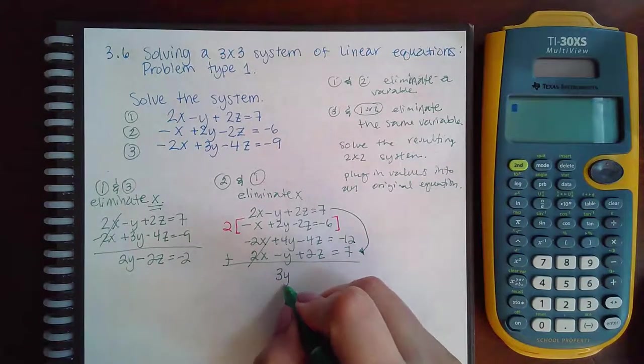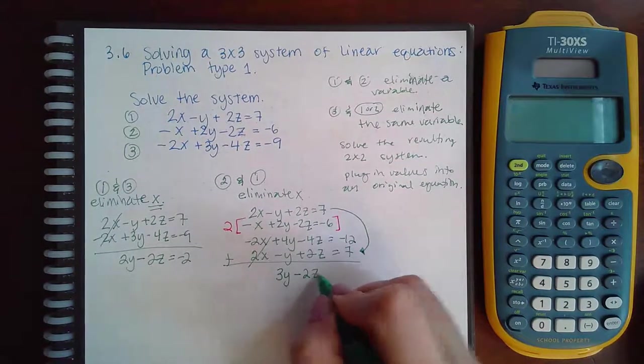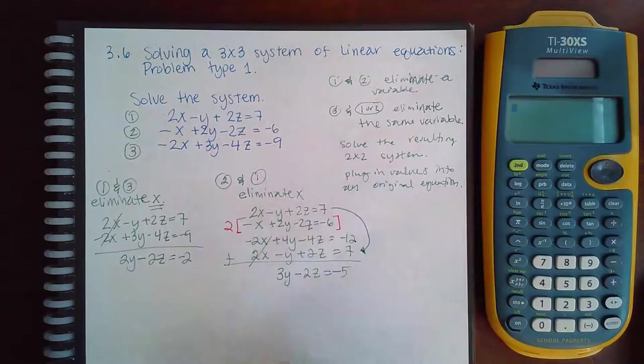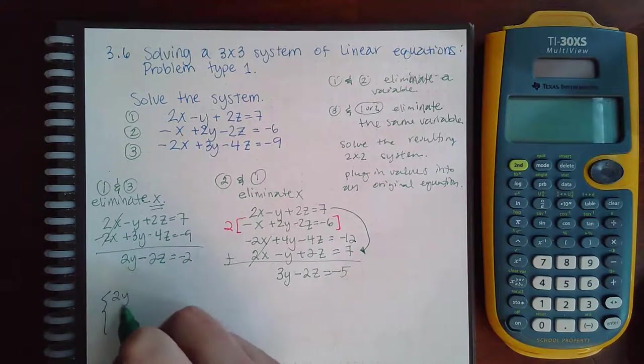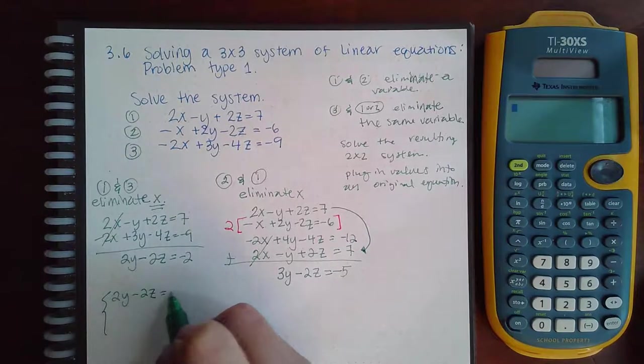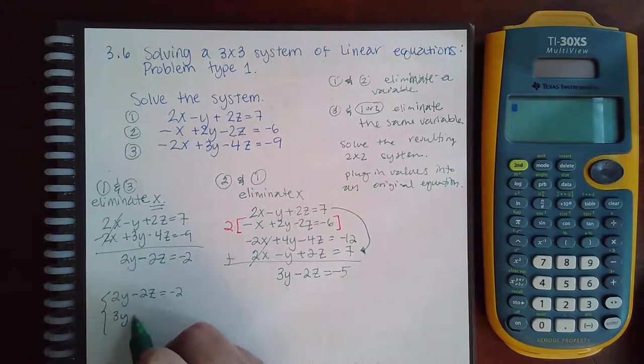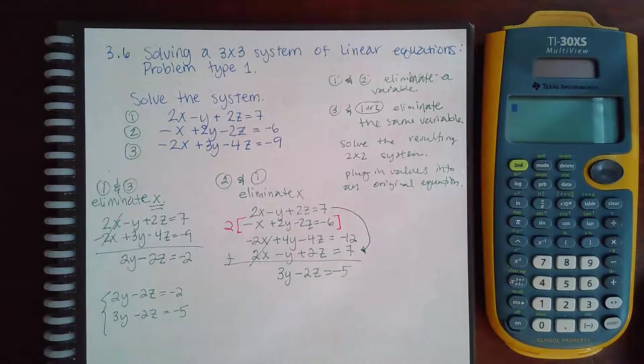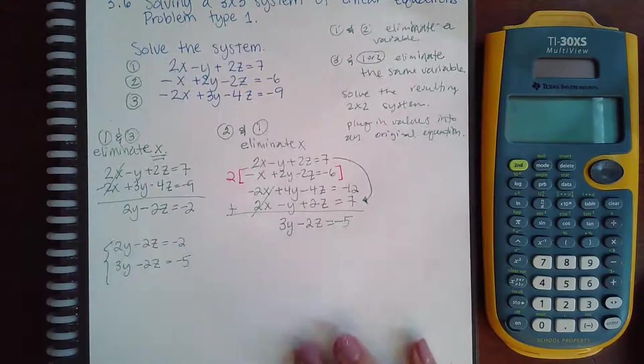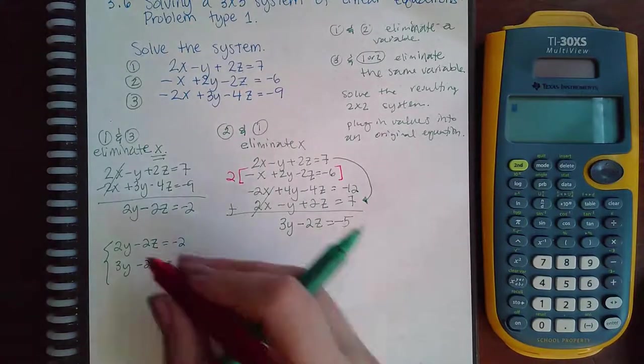Now what we have to do is we have to take these two equations that we now created, and we have to solve this system. Okay, so this is the resulting system we need to solve. And I can do that by eliminating the z.